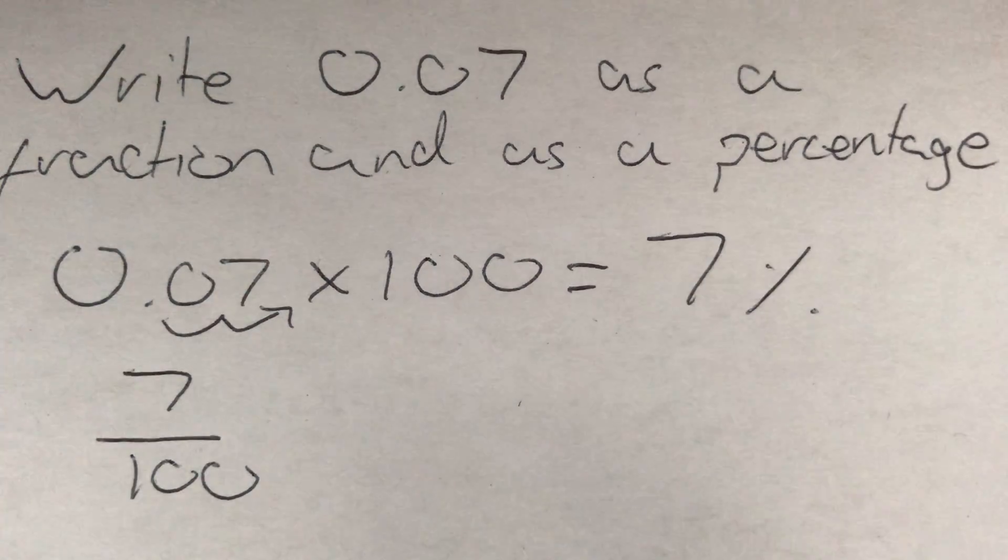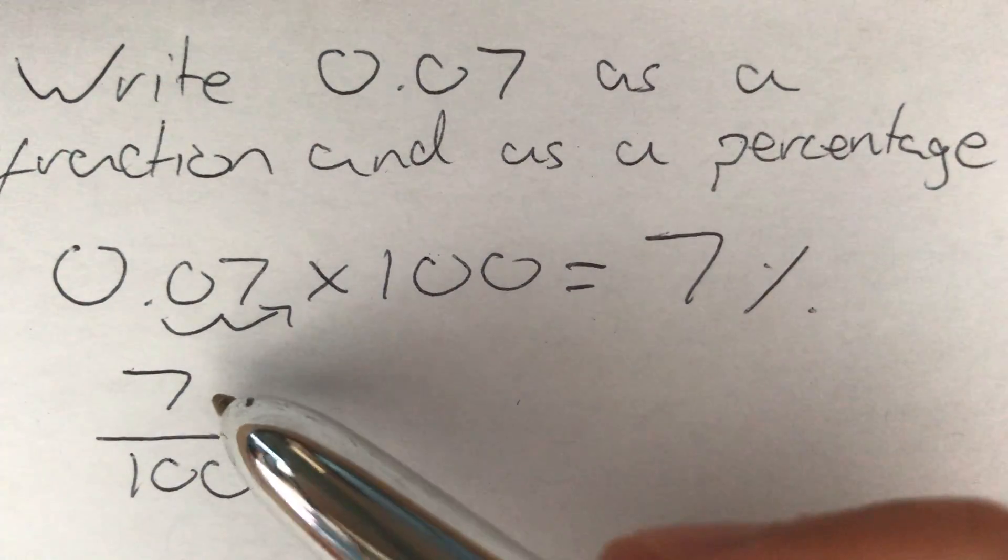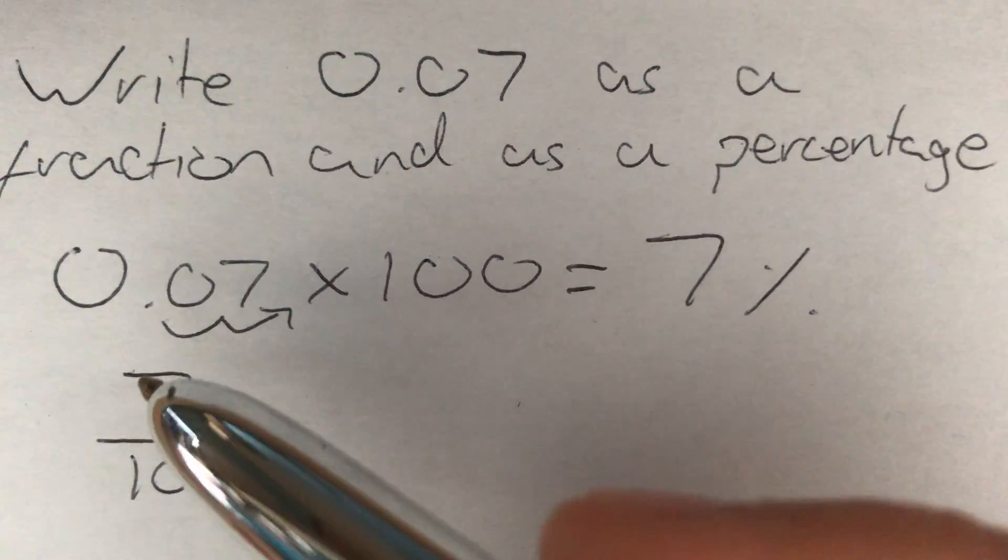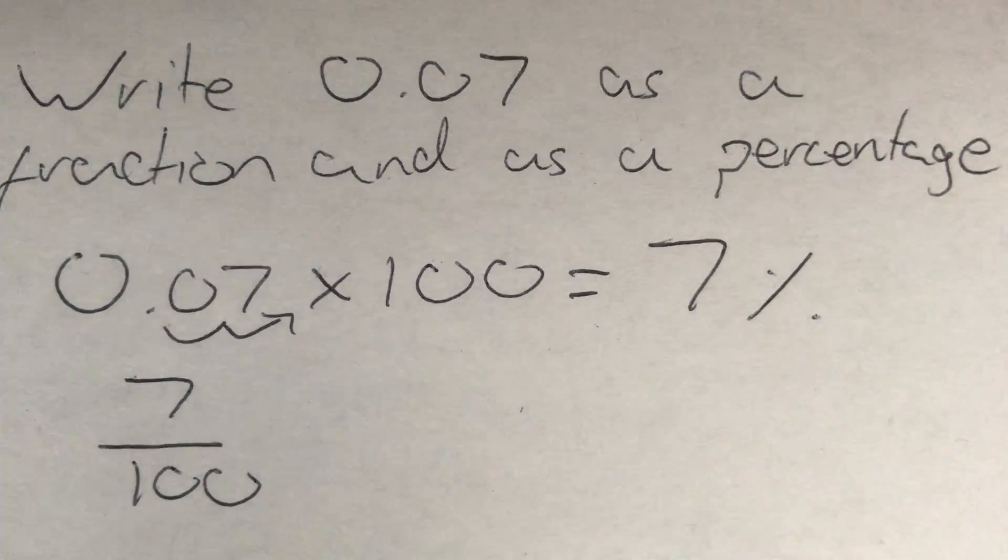We could then think about simplifying this, but since 7 is a prime number, we can't simplify 7 over 100, so we just leave it like this.